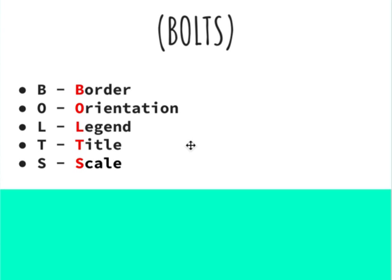BOLTS: B stands for Border, O stands for Orientation, L stands for Legend, T stands for Title, and S stands for Scale. Border, Orientation, Legend, Title, Scale — BOLTS.